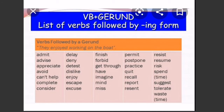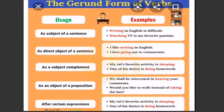Gerund form of verbs — usage and examples. As subject of a sentence — 'Writing in English is difficult.' 'Watching TV is my favorite pastime.' As direct object — 'I like writing in English.' 'I love going out to restaurants.' As subject complement — 'My cat's favorite activity is sleeping.' 'One of the duties is doing homework.' As object of a preposition — 'We shall be interested in hearing your comments.' 'Would you like to walk instead of taking the bus?'